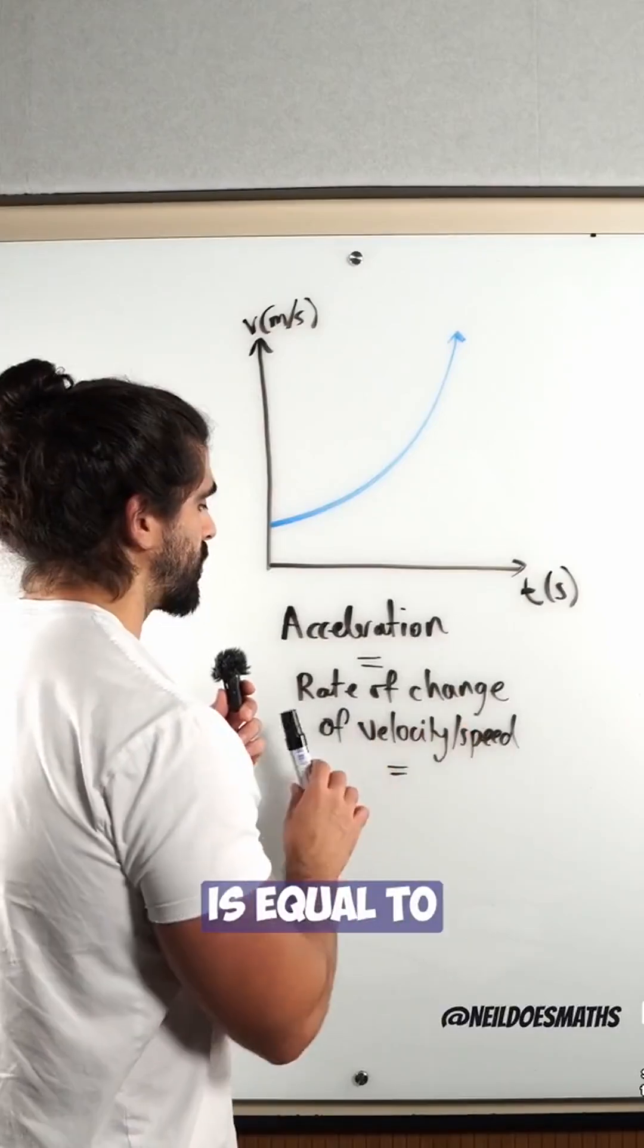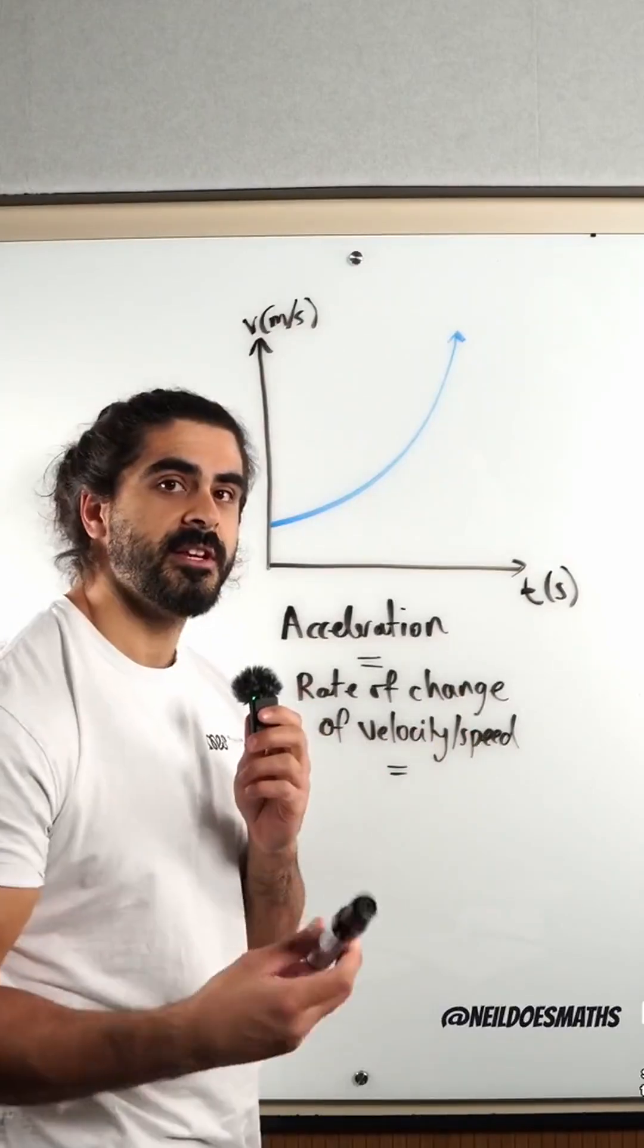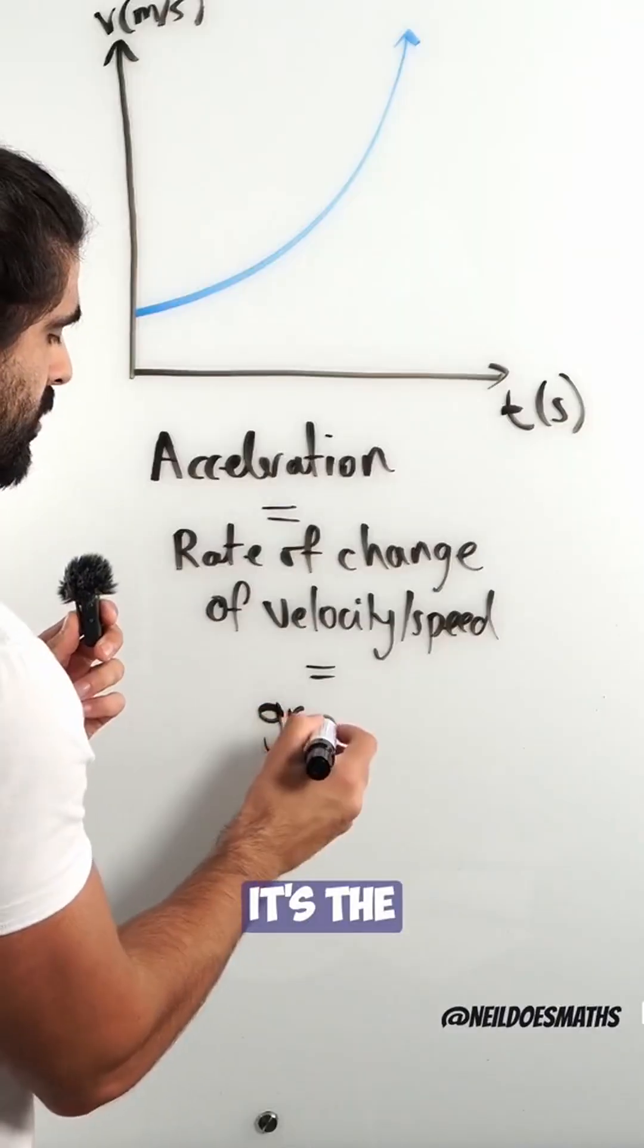So the acceleration is equal to the rate of change of the velocity or speed. Now, where have we seen rate of change before? It's the gradient.